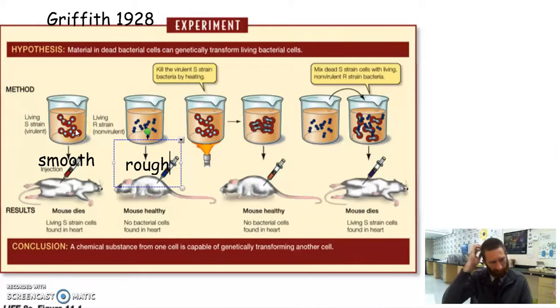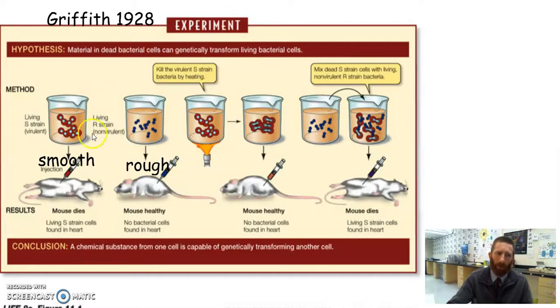And he found out, you know, even nowadays people really don't care about mice, but even back then, like mice were a real problem. And so experimenting on mice wasn't really a big deal. So he injected the S strain into a mouse. Lo and behold, the mouse dies. He injected the R strain into a mouse and lo and behold, the mouse lived. Yay mouse. Right?